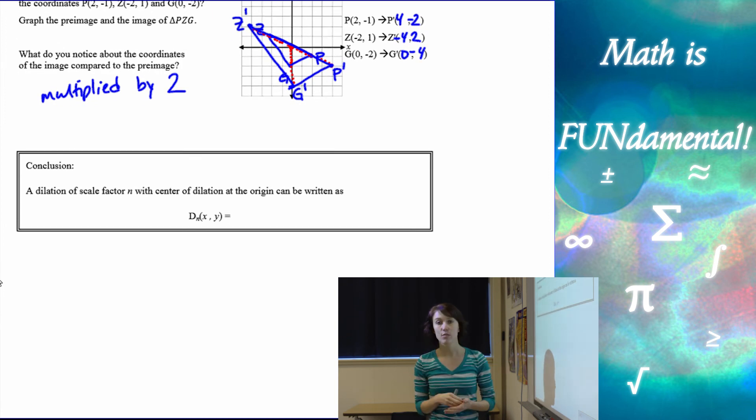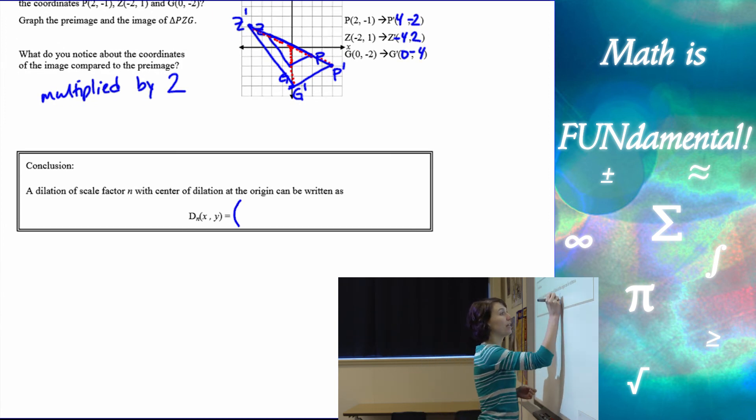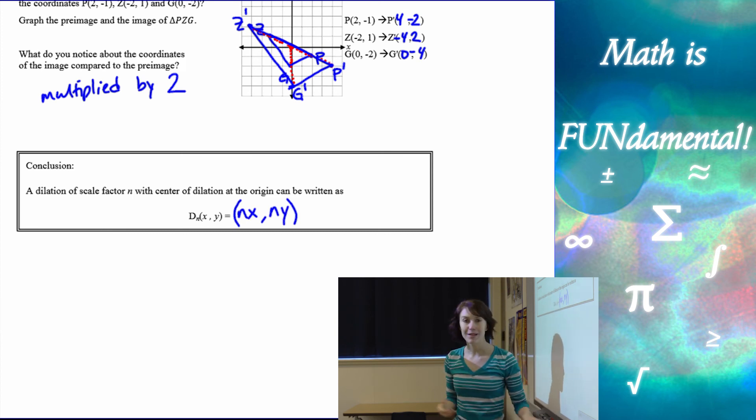So if we started with a point x, y, and our scale factor was n, then our image point is going to be n times x and n times y, which sometimes gives you a nice little shortcut to graphing them.